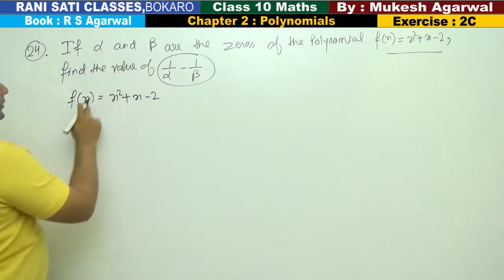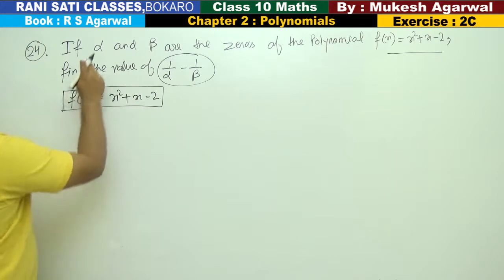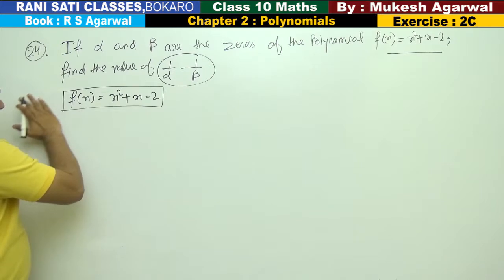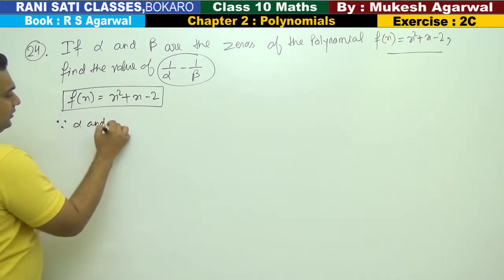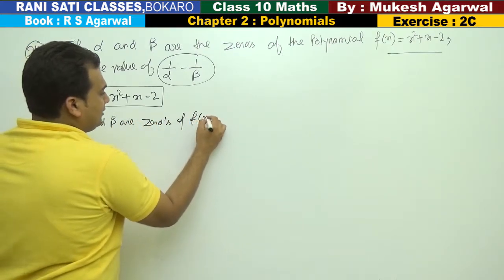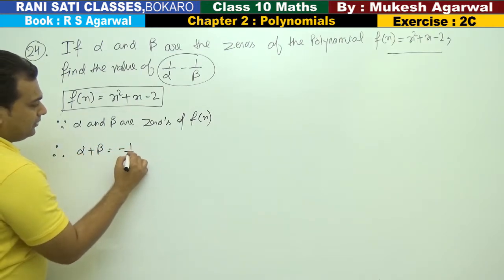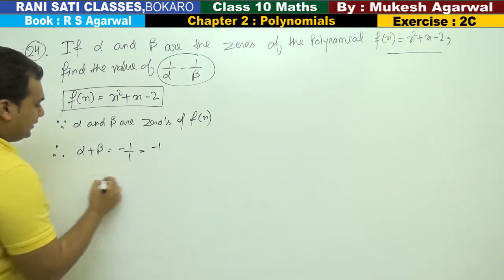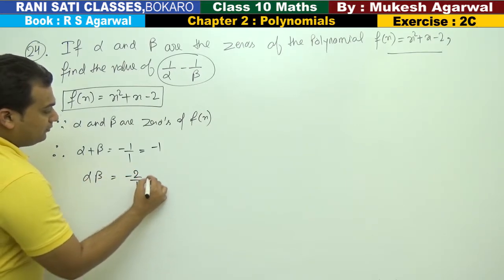Since alpha and beta are the zeros of f(x), therefore alpha plus beta equals minus 1 by 1, that is minus coefficient of x divided by coefficient of x squared. And alpha times beta equals minus 2 by 1, which is minus 2.